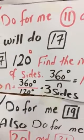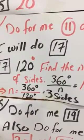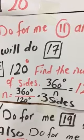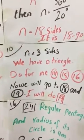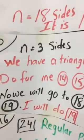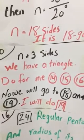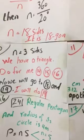So n equals 360 divided by 120, so the number of sides is three sides, and that means when we have three sides we have a triangle. Now we'll go on ahead and we are reaching now 14, 15, 16.